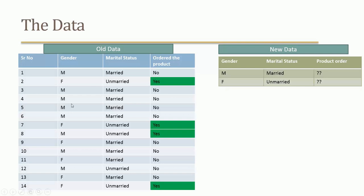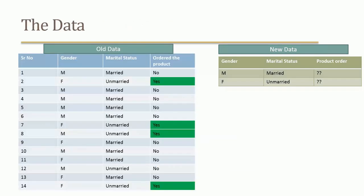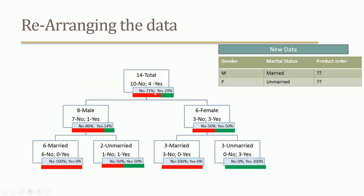This is the original data. We can rearrange it — there are 14 data points. Some are male, some are married, some are unmarried, some are female. In total, 14 customers: 10 have not ordered the product, only 4 customers ordered. So no is 10, yes is 4. The yes percentage is 29%, the no percentage is 71%.